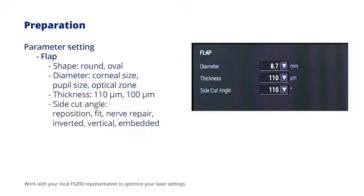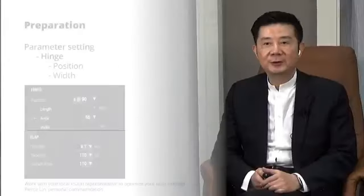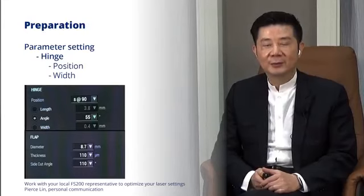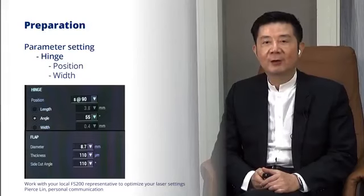The hinge position is usually set at upper cornea in 90 degrees or temporal upper to avoid canal's bleeding into flap interface. The hinge position can also be set at temporal side to avoid traumatic flap displacement. The width is 0.4 mm or 55 degrees in default.